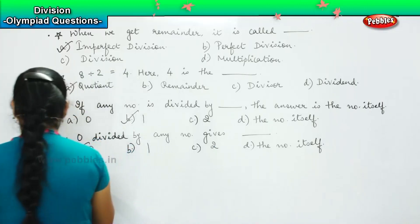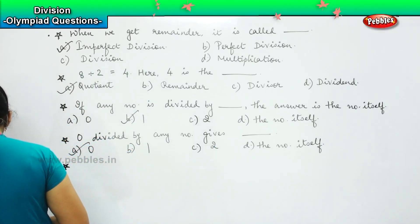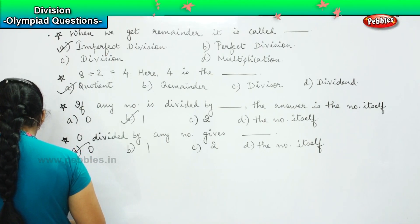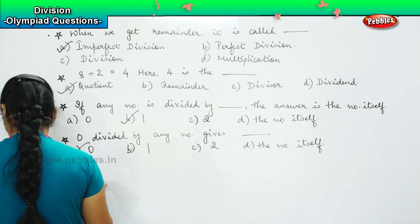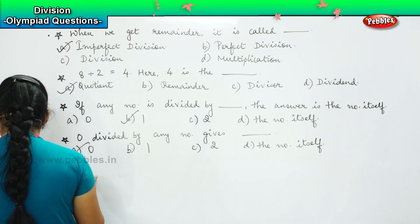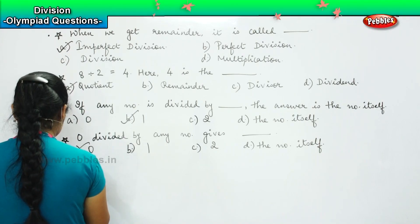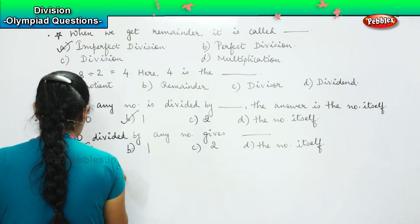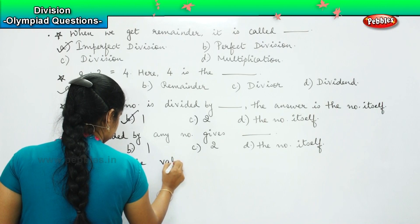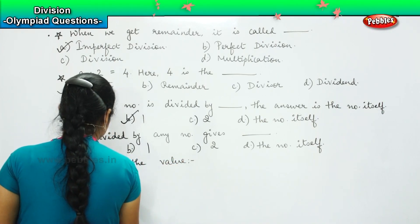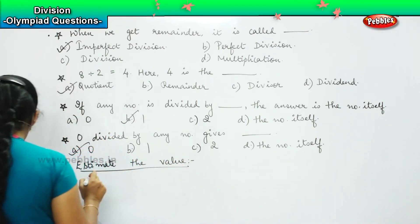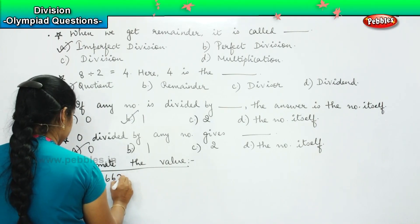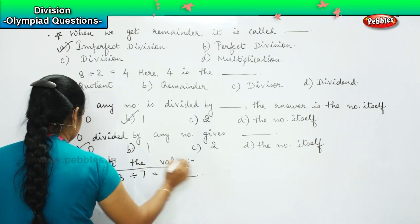Okay, the next question is: estimate the value. The question is 2663 divided by 7 is equal to dash. The options are: A) quotient is 380 and remainder is 3, B) quotient is 380 and remainder is 2, C) quotient is 380 and remainder is 1, D) quotient is 380 and remainder is 0.